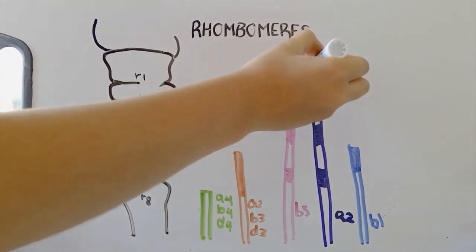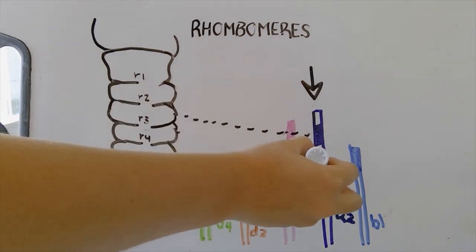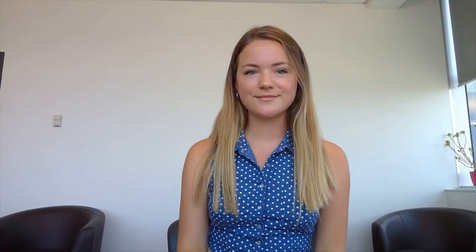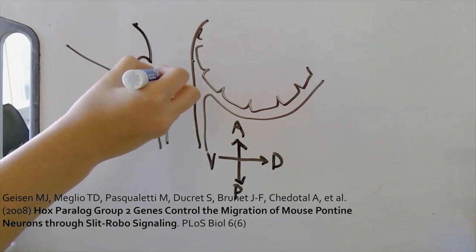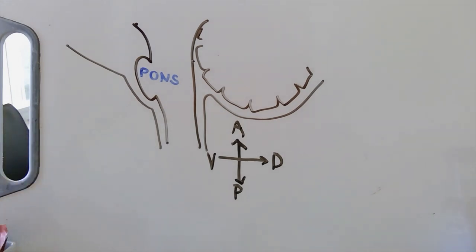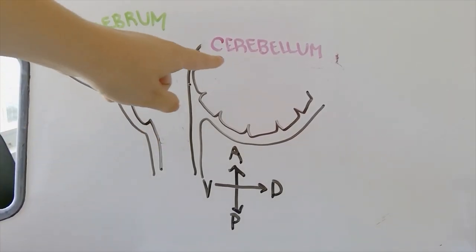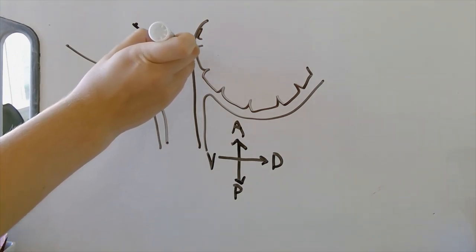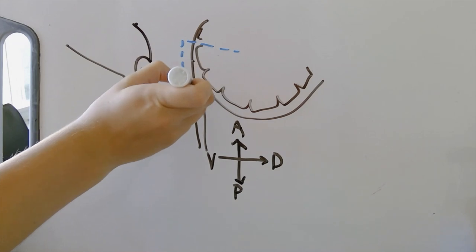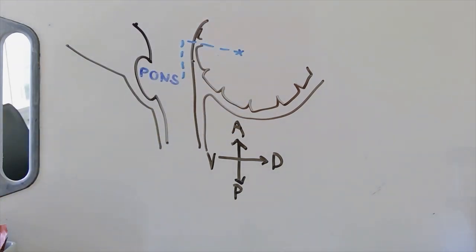We'll choose one Hox gene to focus on to illustrate the importance it has in contributing to the development of the hindbrain in particular. Hox A2 has a unique feature that makes it a good model to illustrate the importance of each and every one of the 39 Hox genes. A 2008 paper by Geissen and colleagues highlighted the effects of a Hox A2 knockout mouse. For background, the pontine neurons — or neurons that derive from the pons in the brainstem — represent a major source of mossy fiber projections to the cerebellum. During mouse hindbrain development, pontine neurons migrate tangentially and sequentially along both the anteroposterior and dorsoventral axes, ultimately ending in the cerebellum. Hox A2 controls the pontine neurons' responsiveness to chemicals that attract and repel them, thus telling them where to go in the brain.